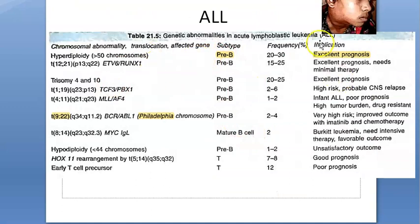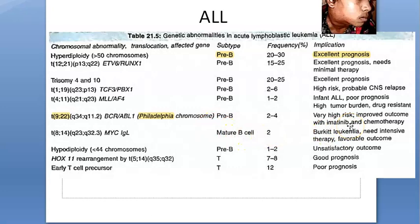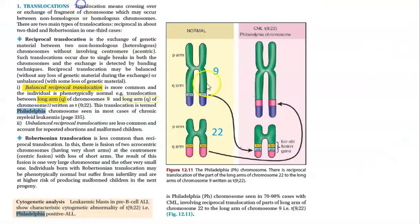Why does this happen? Genetically, it can be due to hyperdiploid cells — more than 50 chromosomes — or due to the Philadelphia chromosome. The Philadelphia chromosome, which is the t(9;22) translocation, causes both ALL and chronic myeloid leukemia. This Robertsonian translocation or reciprocal translocation resulting in the Philadelphia chromosome is important to remember.